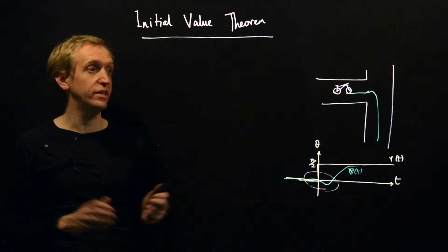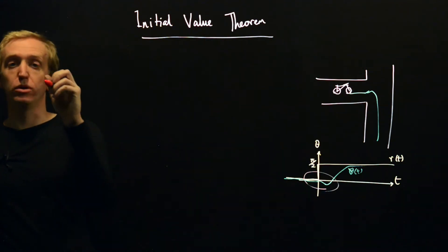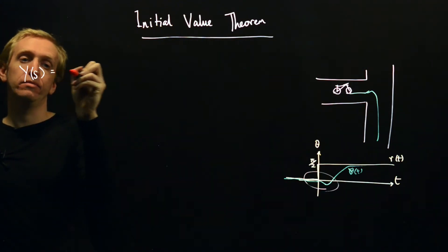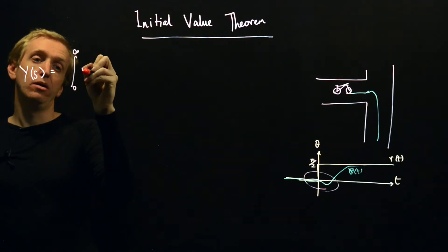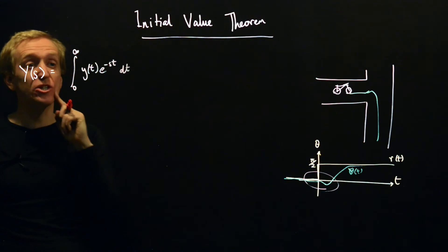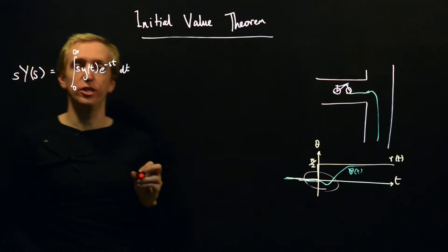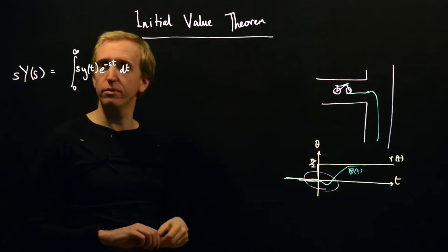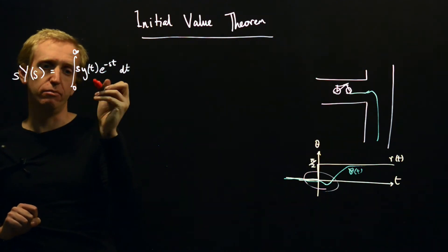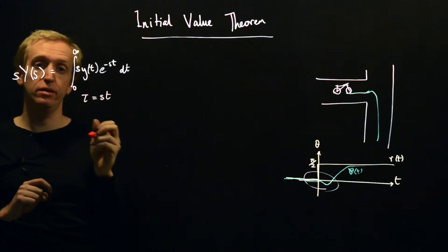So what is the initial value theorem? We're going to start slightly differently to the final value theorem and just look at the Laplace transform of some signal y. What is that? That's just the integral from zero to infinity of y(t)e^(-st)dt. And I'm just going to change things ever so slightly. I'm going to multiply this by s, so nothing too dodgy so far. Now what am I going to do?